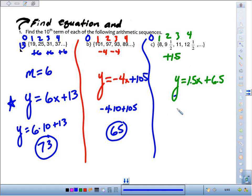If we want to find the 10th term, 1.5 times 10 is 15. Plus 6 1/2 would be 21.5.